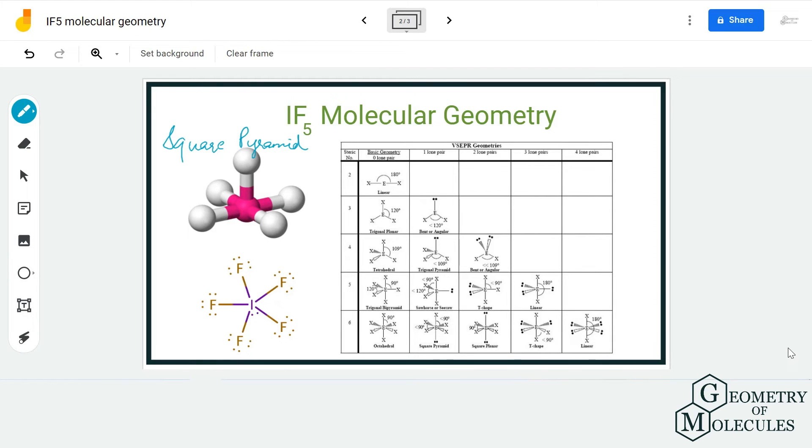To find out the molecular geometry of this molecule, we are going to use the steric number. The steric number for this molecule is six, as there are five fluorine atoms forming bonds with the iodine atom and one lone pair—a total of six regions around the central atom.